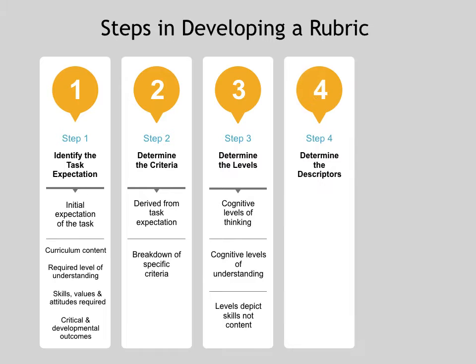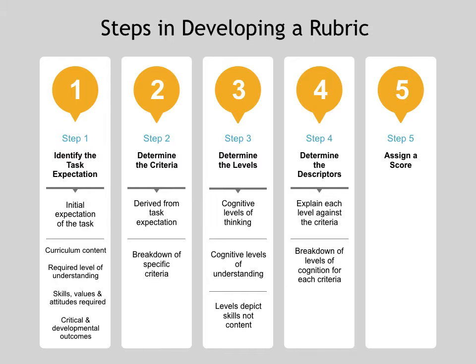From there, we look at what we call the descriptors. These descriptors basically explain each level against the criteria — breaking down the levels of cognition for each criterion. Then we look at assigning a score, which comes right at the end and quantifies the descriptor. This is not necessary in all rubrics. Sometimes you don't necessarily need a score — particularly in foundation phase or practical tasks, you may just want an assessment of the learner without a score.